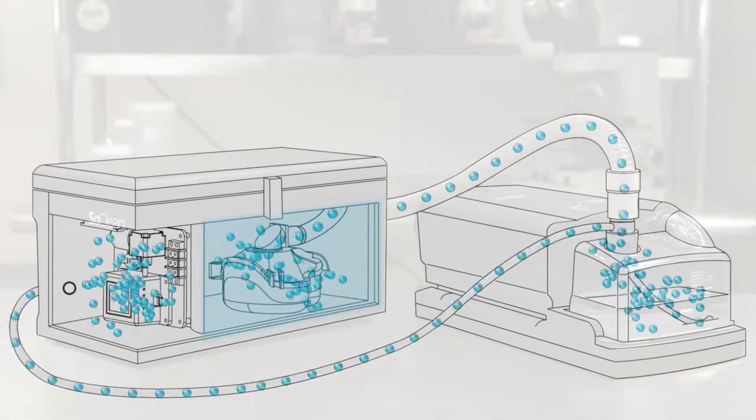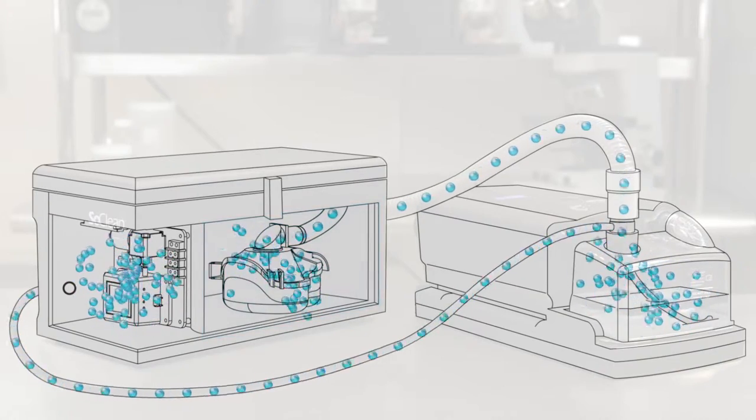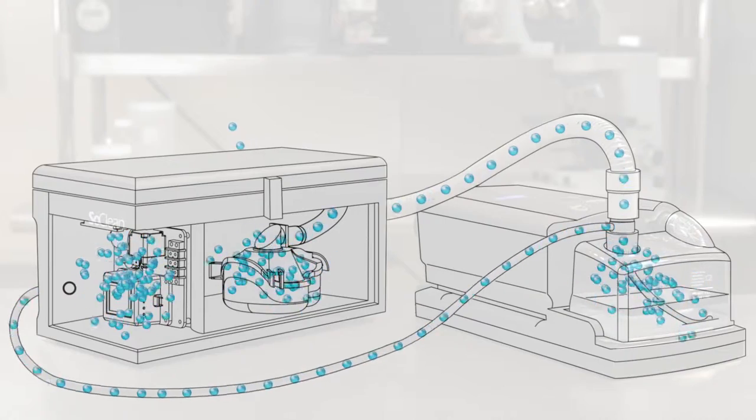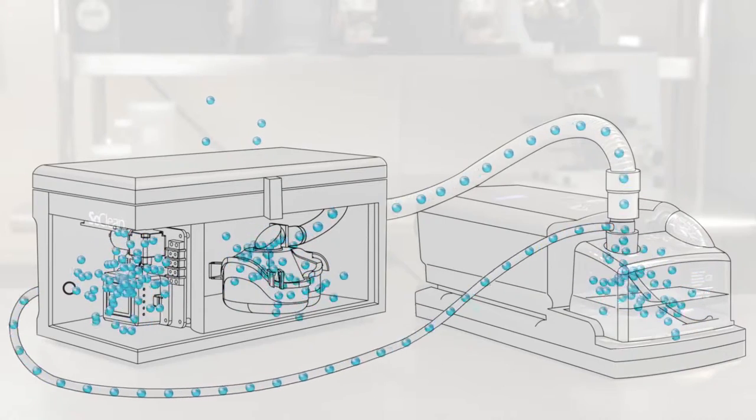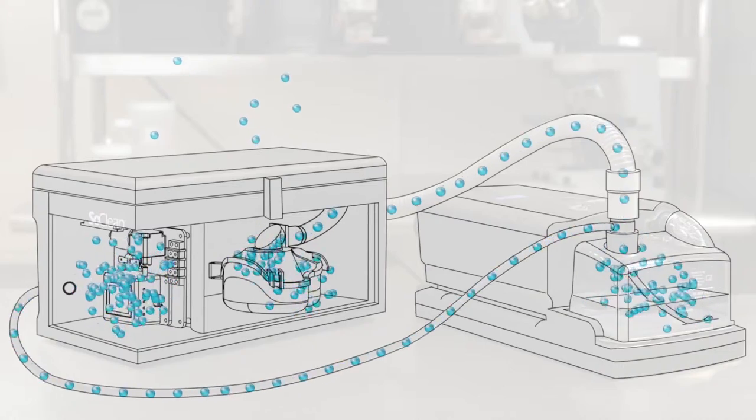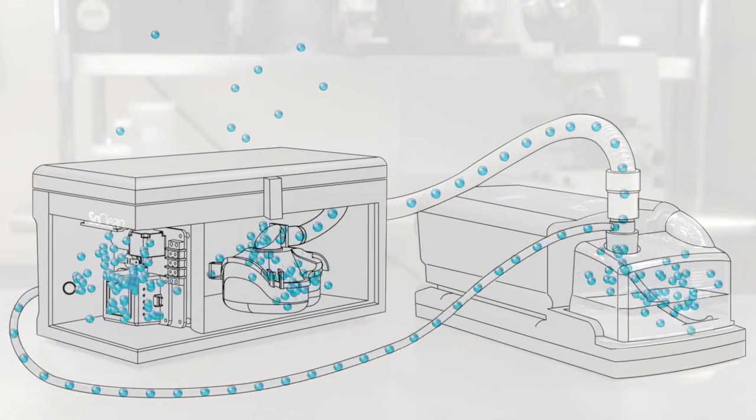In the last leg of its journey, the activated oxygen exits the chamber through a pore that contains a special filter. This filter converts any excess activated oxygen back into the oxygen that we breathe.